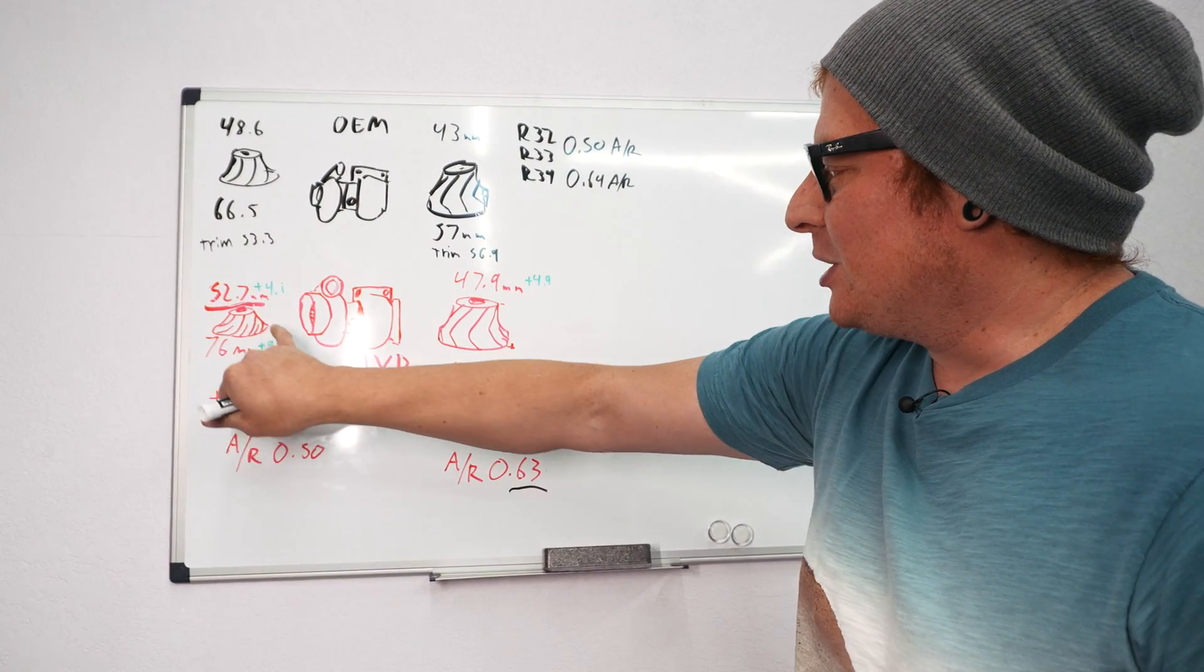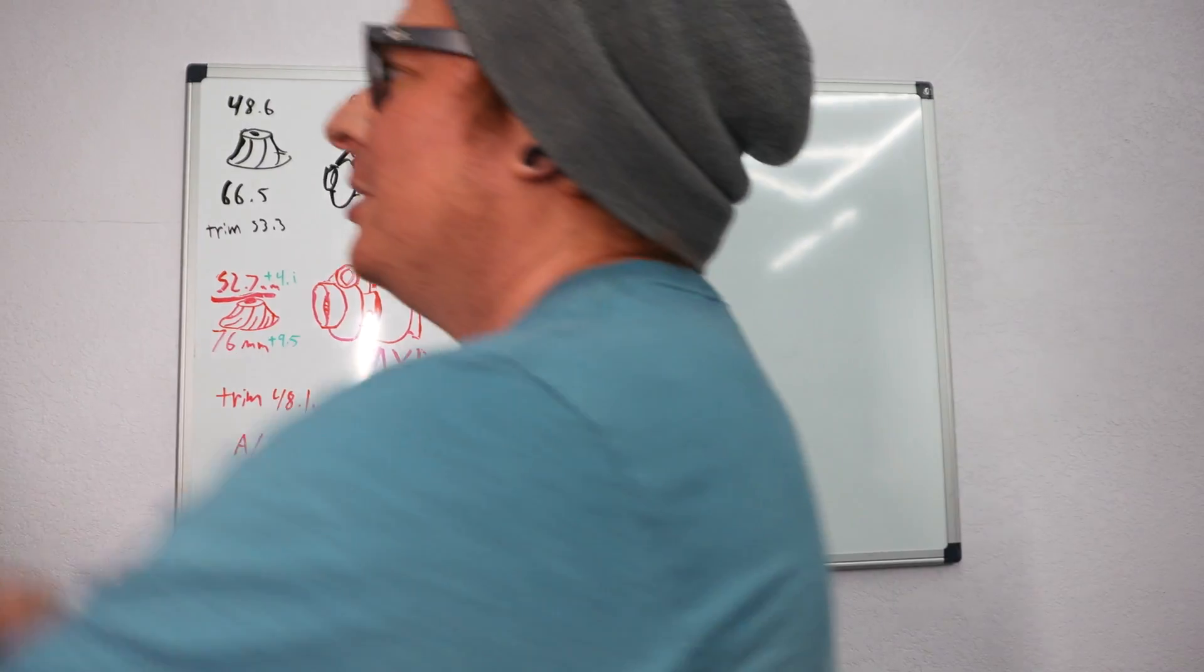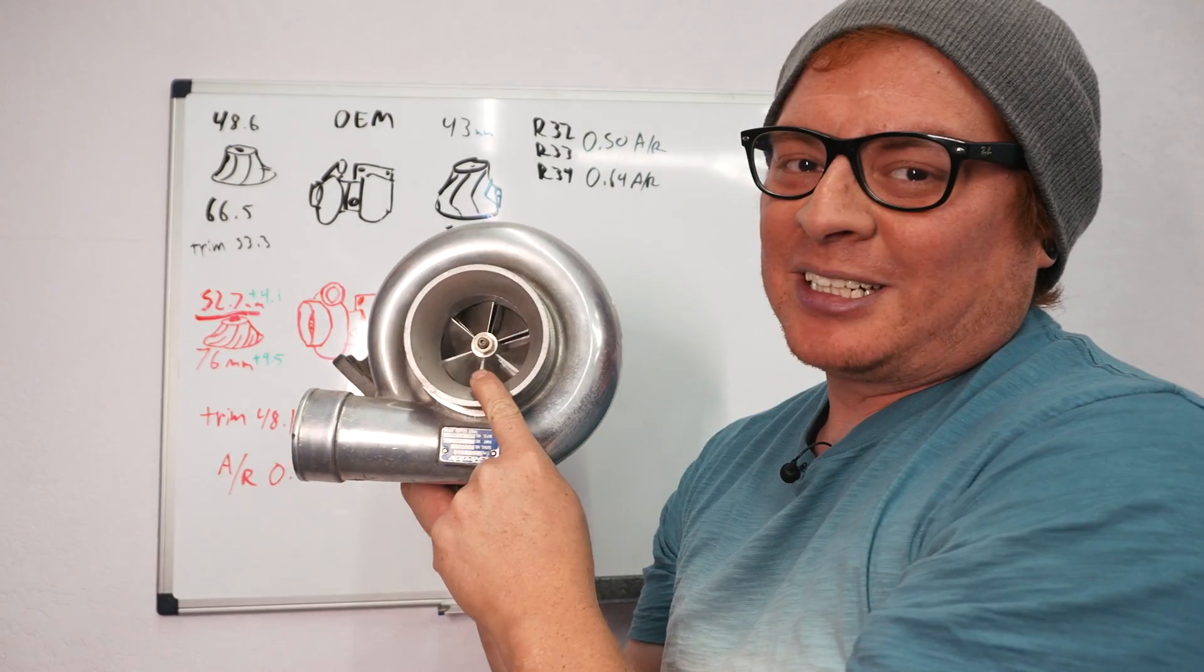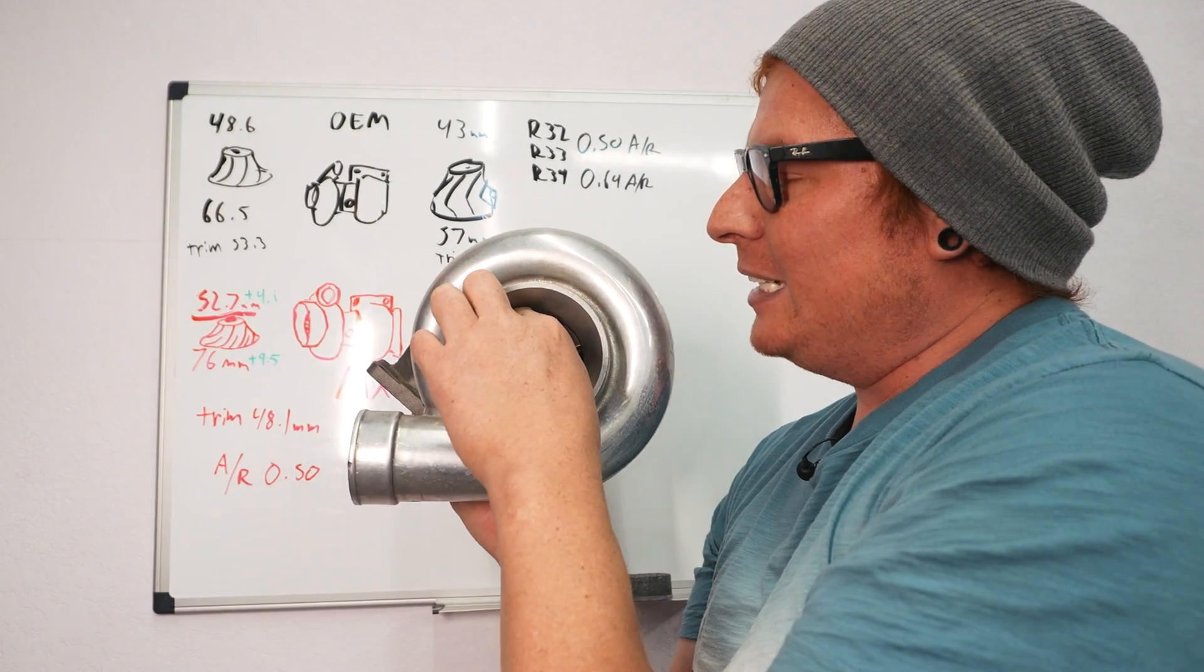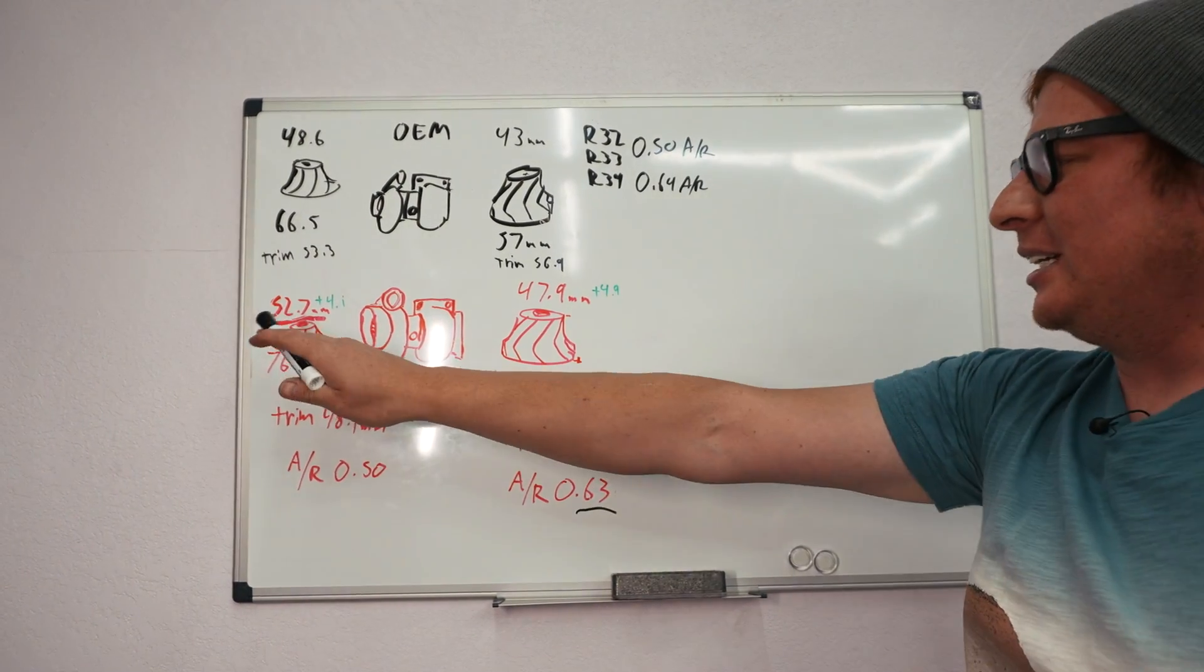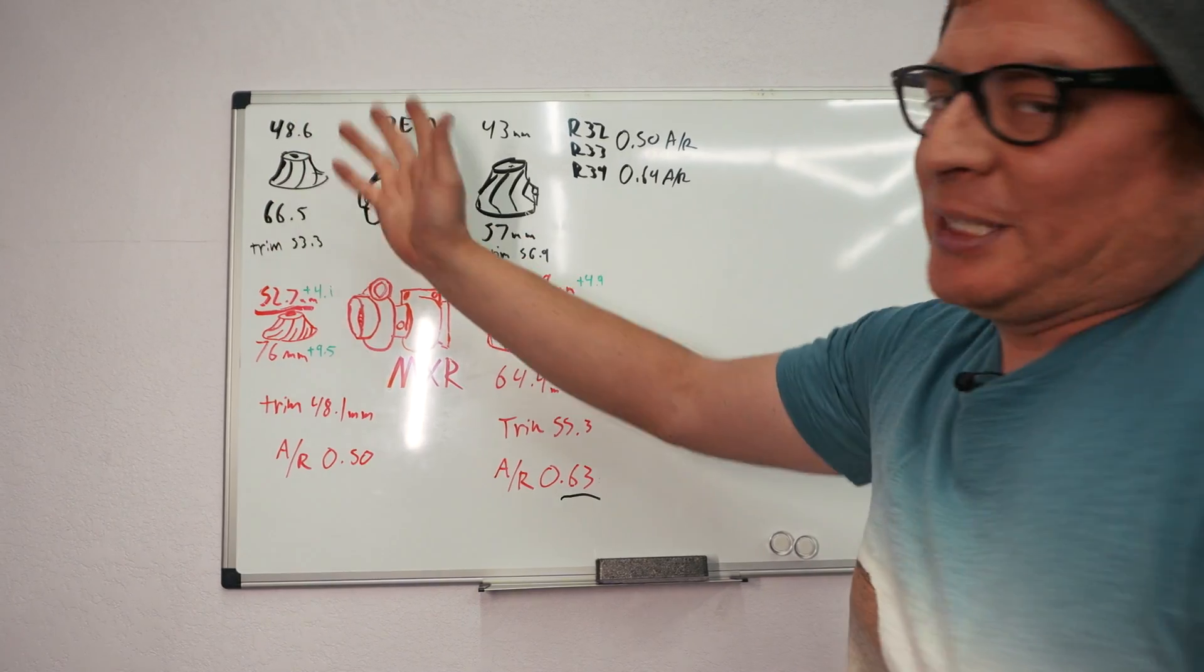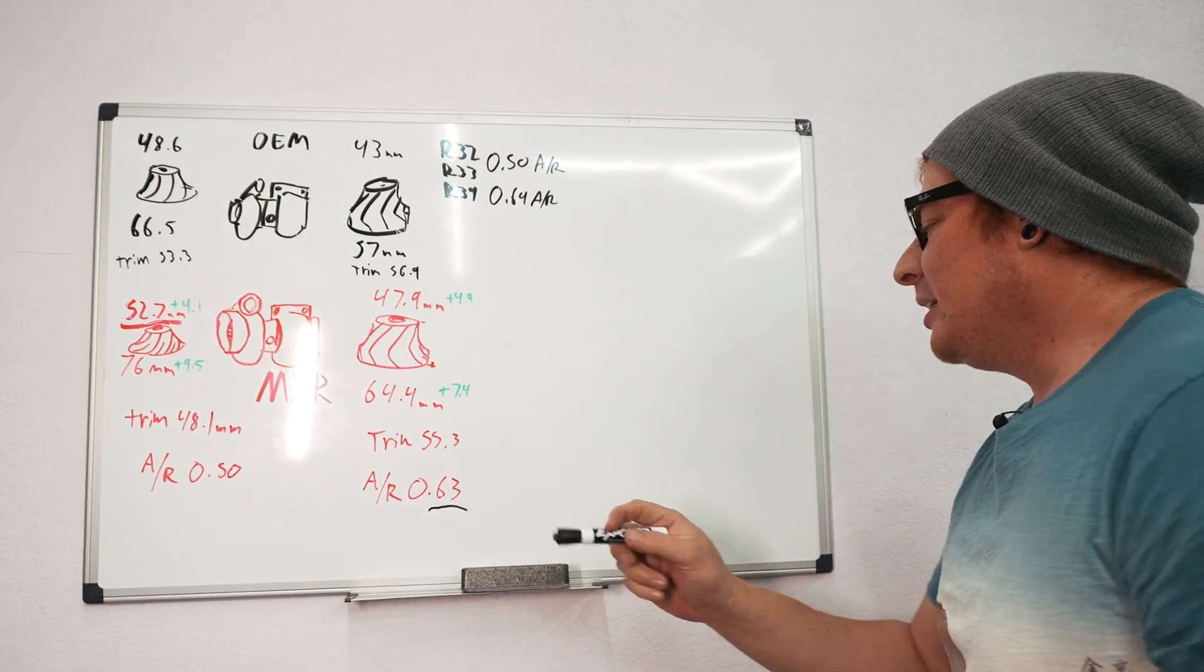That's pertaining to the diameter of the inducer of the compressor. If you look at the compressor wheel, this is the part that you see out the front of the turbo, the fancy cool part that spins - that's the compressor inducer. This size is what you hear referring to the turbo size in general. This is a 52.7 mil turbo and the stock one was a 48.6 mil turbo, so just on that dimension we have a 4.1 millimeter increase.